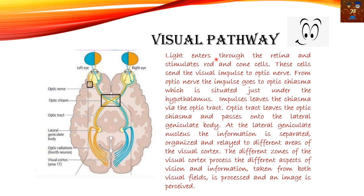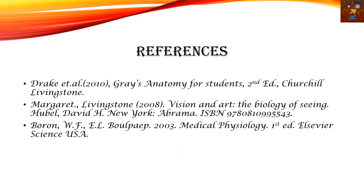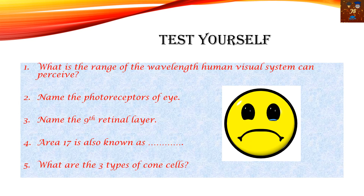The visual pathway: light enters the retina, stimulates the rod and cone cells, then signals travel to the optic nerve, then to the optic chiasma, then into the optic tract, and then to the lateral geniculate body. At the lateral geniculate body, information is separated, organized, and layered to different areas of the visual cortex for perception. The different zones of the visual cortex process different aspects of vision — size, shape, and color. The visual cortex is also known as area 17.